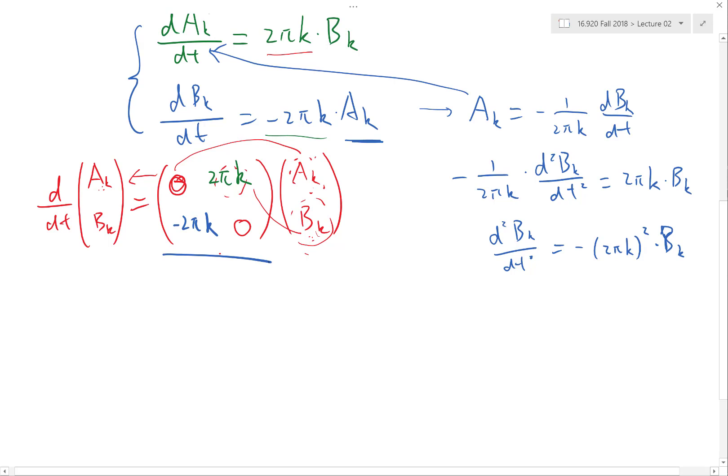What is the eigenvalue of the matrix? Well, eigenvalue is a linear operator, which means the eigenvalue of a constant multiplied by a matrix is equal to that constant multiplied by the eigenvalue of the matrix. So the eigenvalues is just 2πK times the eigenvalues of the matrix 0, 1, -1, 0.